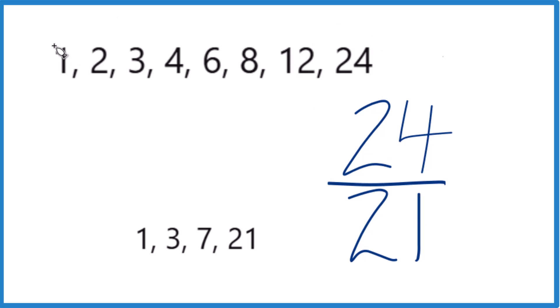So for 24, we have 1 times 24, 2 times 12, 3 times 8, and 4 times 6. For 21, we only have 1 times 21 and 3 times 7.